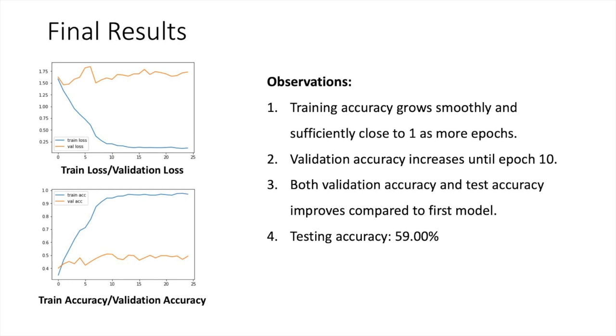After the two changes we have made to our model, the first one is to add augmentation process to validation set. And the second one is to add L2 regularization to avoid overfitting. After these two changes, we have our final results. From the images, we can see that we also have the two images indicating training loss and validation loss, and training accuracy and validation accuracy. Based on these two results, we have some observations. The first one is our training accuracy grows smoothly and sufficiently close to one as more epochs. And the second one is the validation accuracy increases until epoch 10. In our preliminary results, our validation accuracy stuck at around 50 until epoch 3. And the third observation is that both validation accuracy and test accuracy improve compared to first model. So at last, we have our test accuracy to 59 percent.